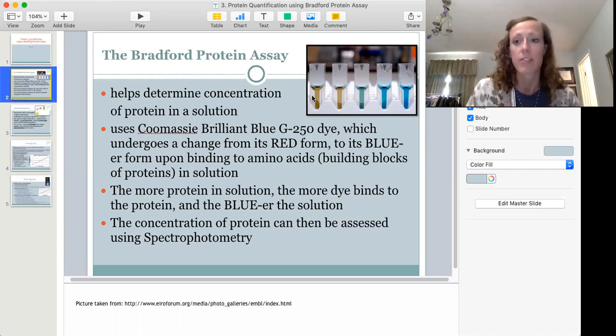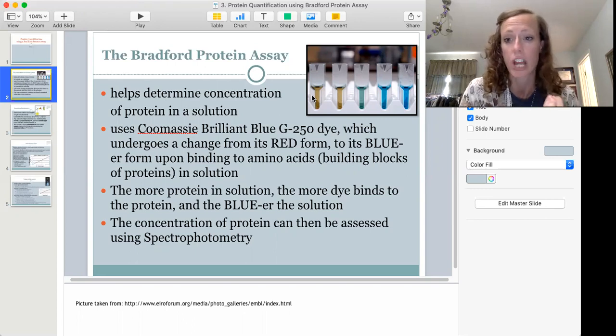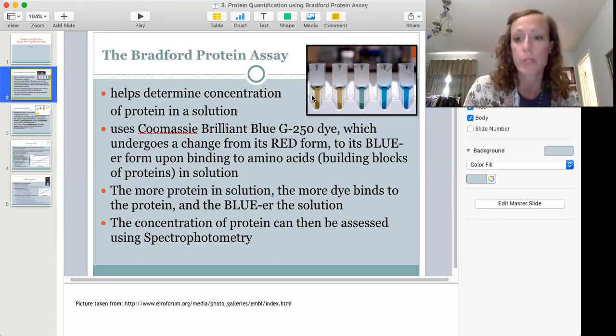Now if instead you have water that has protein in it, then when you add that dye, the proteins will be bound. Some of the amino acids in the protein will be bound by the dye, which then undergoes a change to a bluer shade, a bluer color. So that's why you're seeing these cuvettes on the right hand side with a nice vibrant blue color.